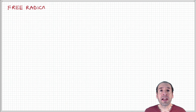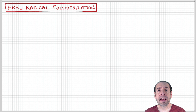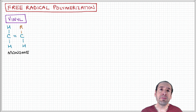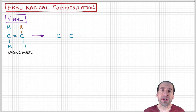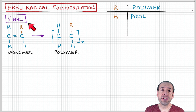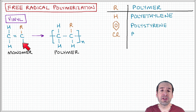Next, I want to take a quick look at some common polymers that are formed by free radical polymerization. There are two main classes that we're probably all familiar with. One involves a so-called vinyl group, which refers to a monomer where there's a carbon-carbon double bond, three hydrogens,